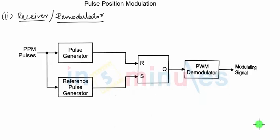Let us now discuss the receiver or demodulator of pulse position modulation. This is the block diagram. You can see that this time we are going to convert PPM signal into PWM signal. So the output of the RS flip-flop that we are using here will be nothing but PWM, and that PWM signal will be given to PWM demodulator.